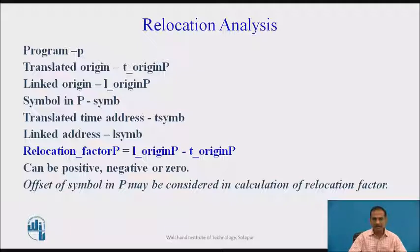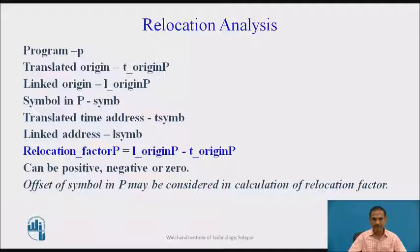Let us perform an analysis to understand what relocation actually is. Consider a program P which has, after translation: a translated origin T_origin(P), a linked origin L_origin(P), and a symbol SYMB in P with translated-time address T_symbol and linked address L_symbol. Thus, the relocation factor for the program is L_origin(P) minus T_origin(P), which can be positive, negative, or zero.